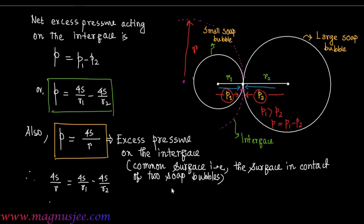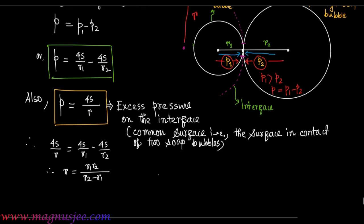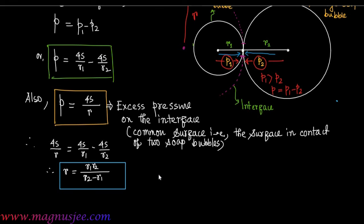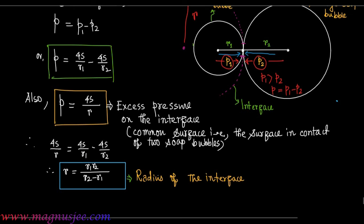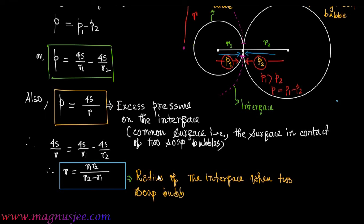Since p equals 4s/r equals 4s/r1 minus 4s/r2, we get r equal to r1·r2 divided by (r2 minus r1). This is the radius of the interface when two soap bubbles of different radii are in contact.